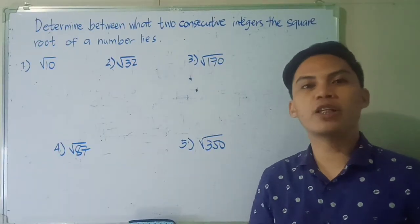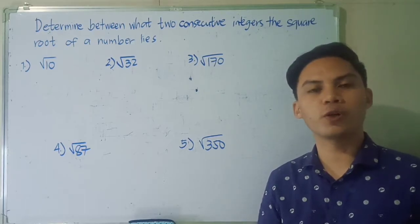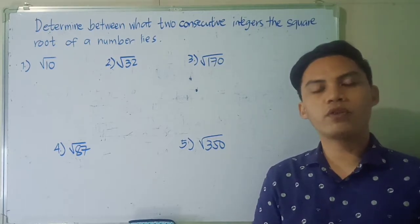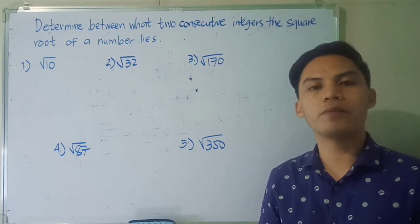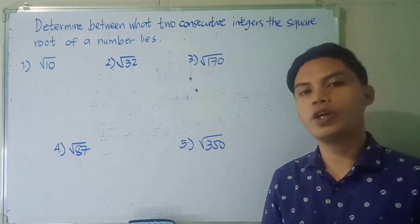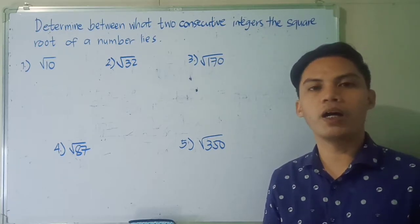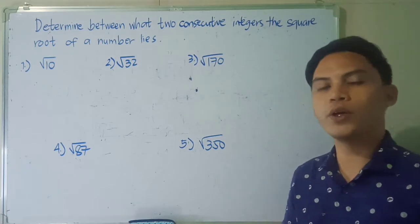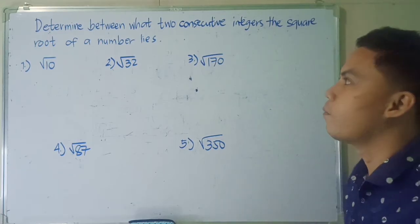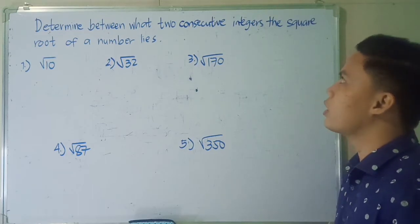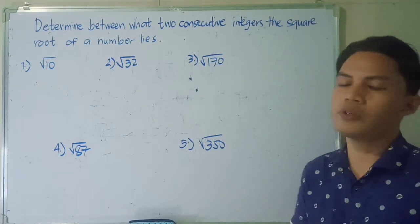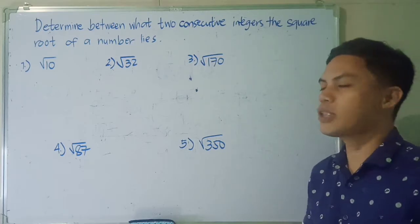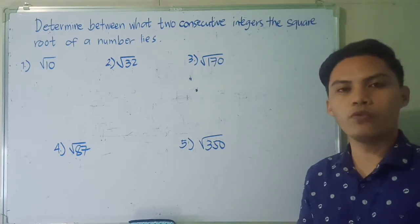So to find out between what two consecutive integers the square root of a number lies, we need to familiarize or memorize the perfect squares shown earlier. Let's have our example: determine between what two consecutive integers the square root of a number lies. Our first example is the square root of 10.